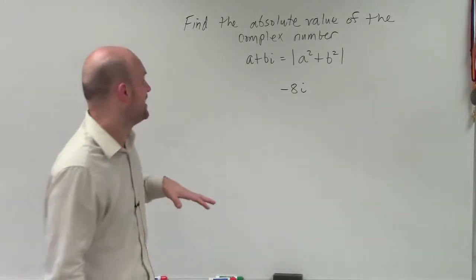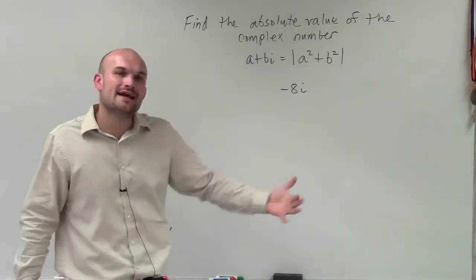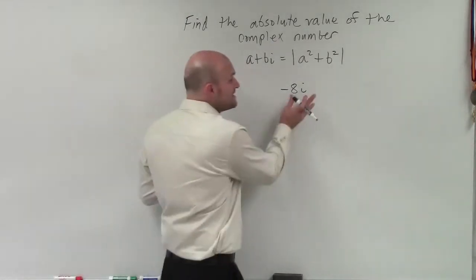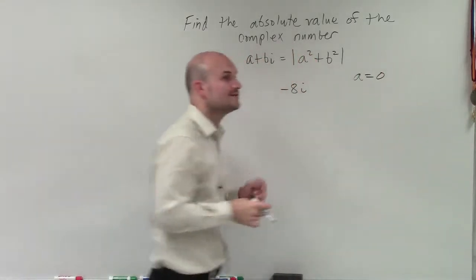And this always gets a lot of students when we're trying to find the complex number, because they're looking at this, but it's not in the form of a plus bi. It is. This is an imaginary number, because our a is equal to 0.